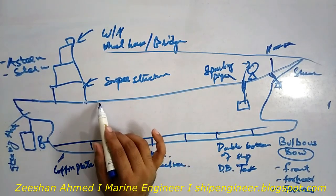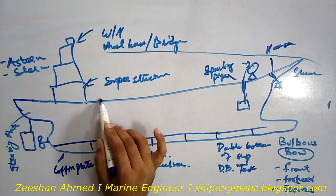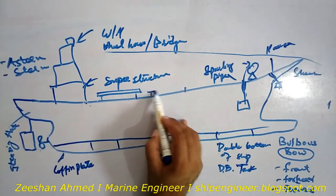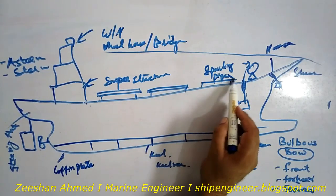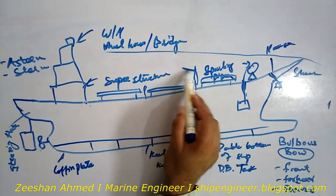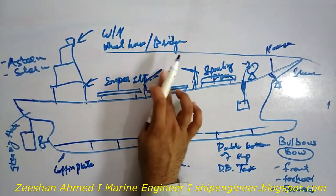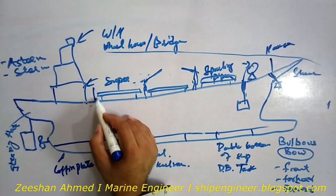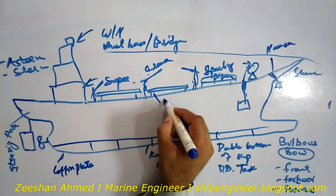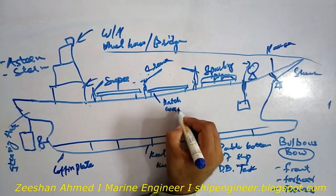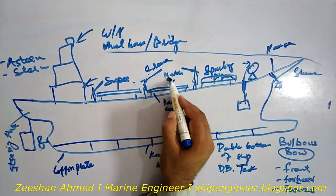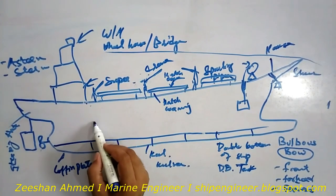Here is the cargo space. This is the coaming and this is the hatch covers, if you see from the side. Maybe there will be a crane in between these. The crane — I'm showing the crane. This is the hatch coaming and these are the hatch covers. Maybe there will also be a partition known as the tween deck.